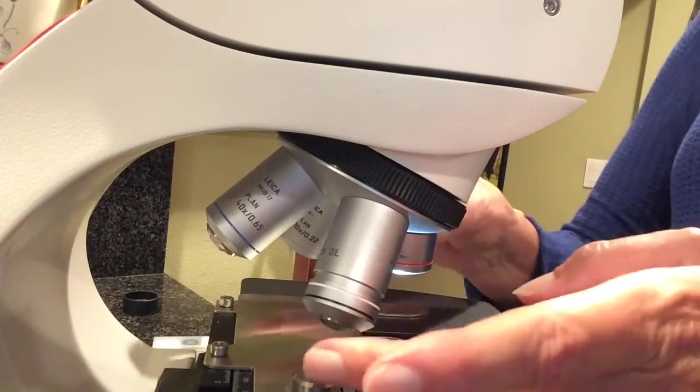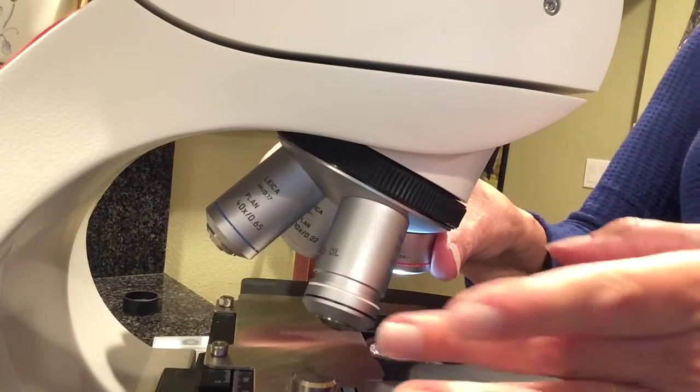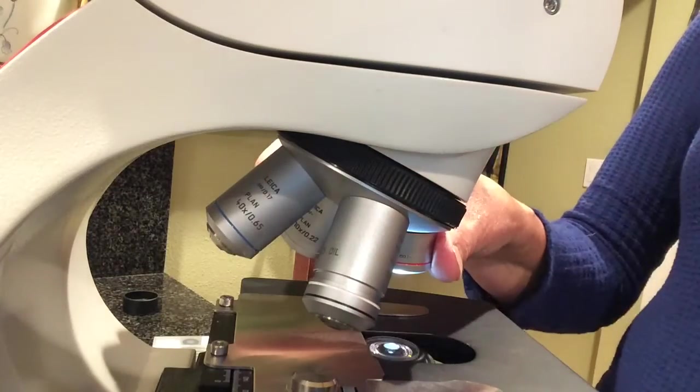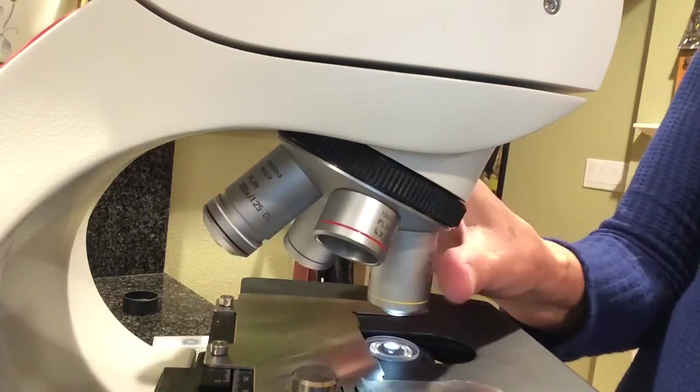Clean the end of your thousand X lens with the alcohol wipe, or if you don't have that, just use a soft lens cleaning cloth and some alcohol. The thing that you don't want to do is get oil on any of these other lenses.